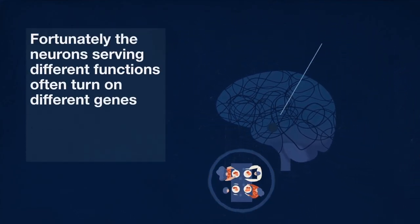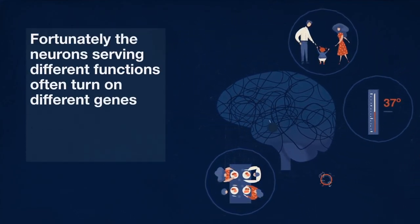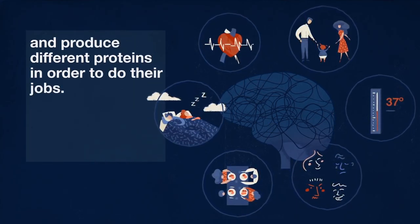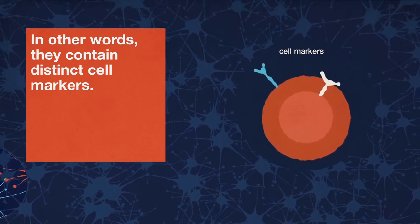Fortunately, the neurons serving different functions often turn on different genes and produce different proteins in order to do their jobs. In other words, they contain distinct cell markers.